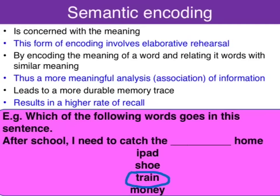Semantic encoding is concerned with the meaning of the word, and we use the elaborative rehearsal technique by linking the word to an existing long-term memory. We encode the meaning of the word and relate it to words with a similar meaning in our long-term memory, creating a more meaningful analysis by associating the information with our existing understanding of vocabulary. This creates a more durable memory trace that is less susceptible to decay, resulting in the highest rate of recall as opposed to the phonemic and visual encoding methods.